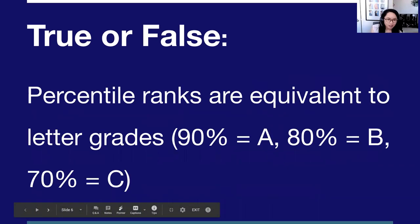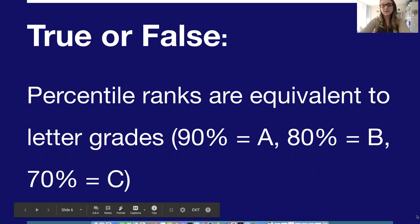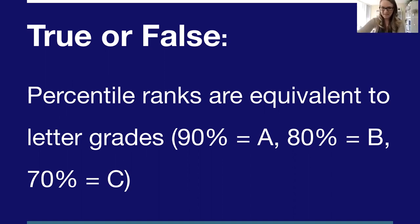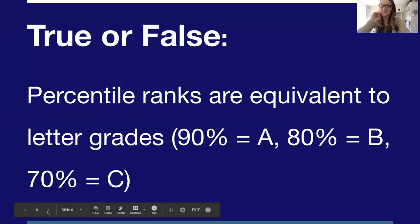True or false: A percentile rank is equivalent to letter grades — such as 90% is an A, 80% is a B, 70% is a C. The answer is false. A percentile rank and a percentage score such as a grade are not the same thing. We are going to dive into what some of these terms mean.